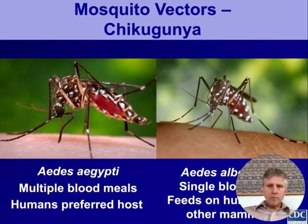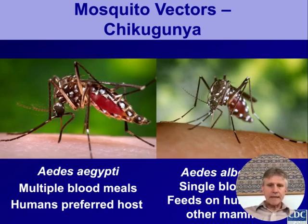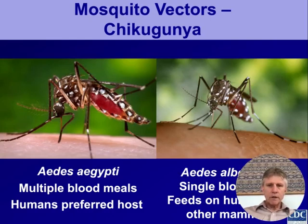There are two major vectors for chikungunya. The most common one worldwide is Aedes aegypti, a relatively promiscuous mosquito that takes multiple blood meals and prefers to feed on humans. It tends to be found more commonly in urban areas, though it may feed on humans or other mammals and be found in semi-urban or rural areas. Aedes aegypti has a much wider global geographic distribution today and is capable of transmitting chikungunya.